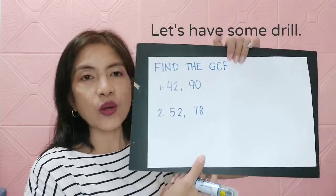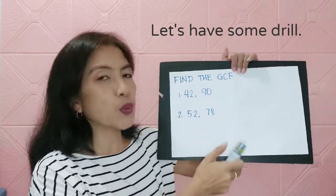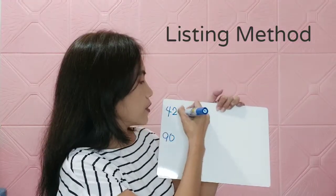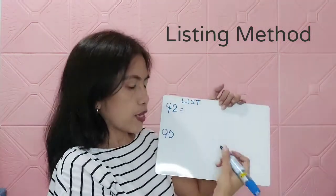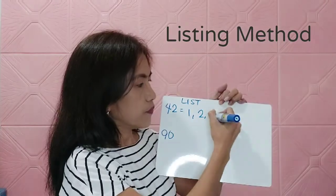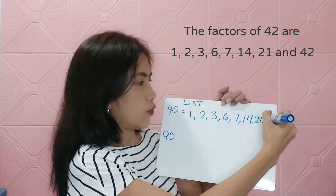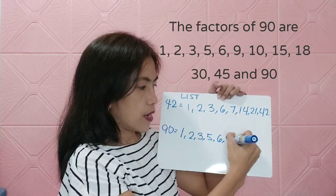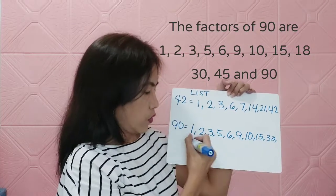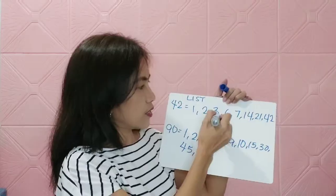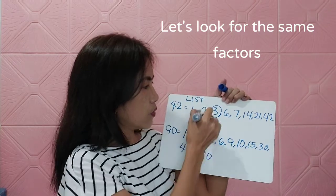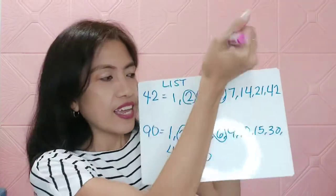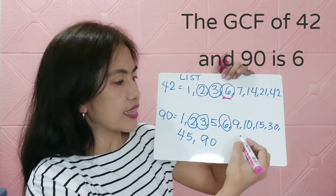Now let's find the GCF of 42 and 90, and also 52 and 78. Using the listing method for 42 and 90: the factors of 42 are 1, 2, 3, 6, 7, 21, and 42. The factors of 90 are 1, 2, 3, 5, 6, 9, 10, 20, 40, 45, and 90. The common factors are 2, 3, and 6, but the greatest is 6. So the GCF of 42 and 90 is 6.